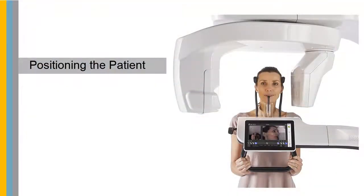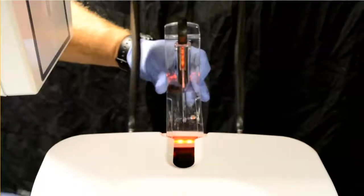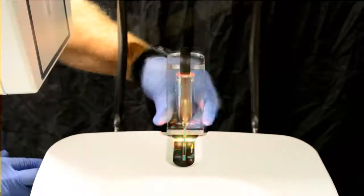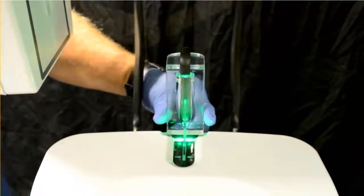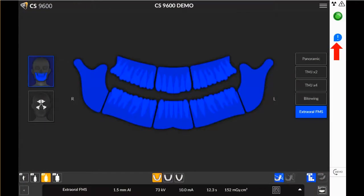Positioning the Patient. To prepare and position the patient, follow these steps. Position the appropriate chin rest on the chin rest support. A warning will appear on the interface if you do not choose the corresponding positioning accessory.